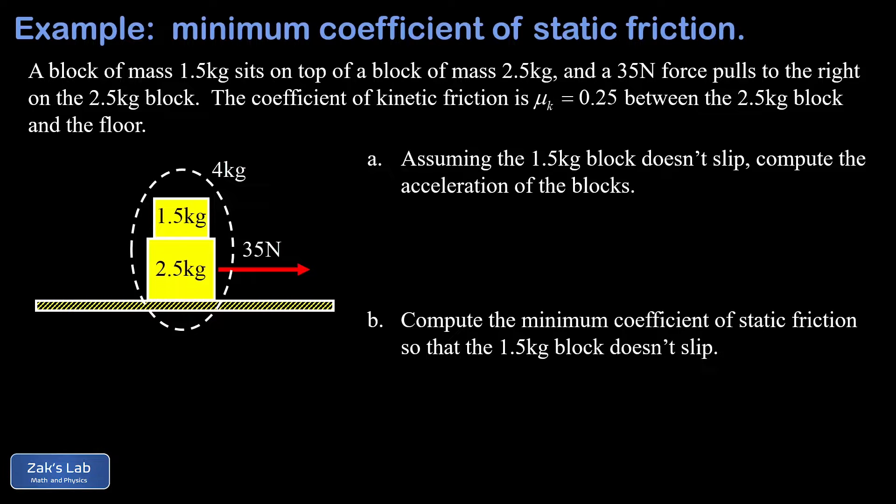The four kilograms of mass is being pulled to the right with this 35 newton force but it also feels a kinetic friction force pulling to the left as it slides along the ground. To finish the force diagram here we have the weight mg pulling down on the four kilogram combination.